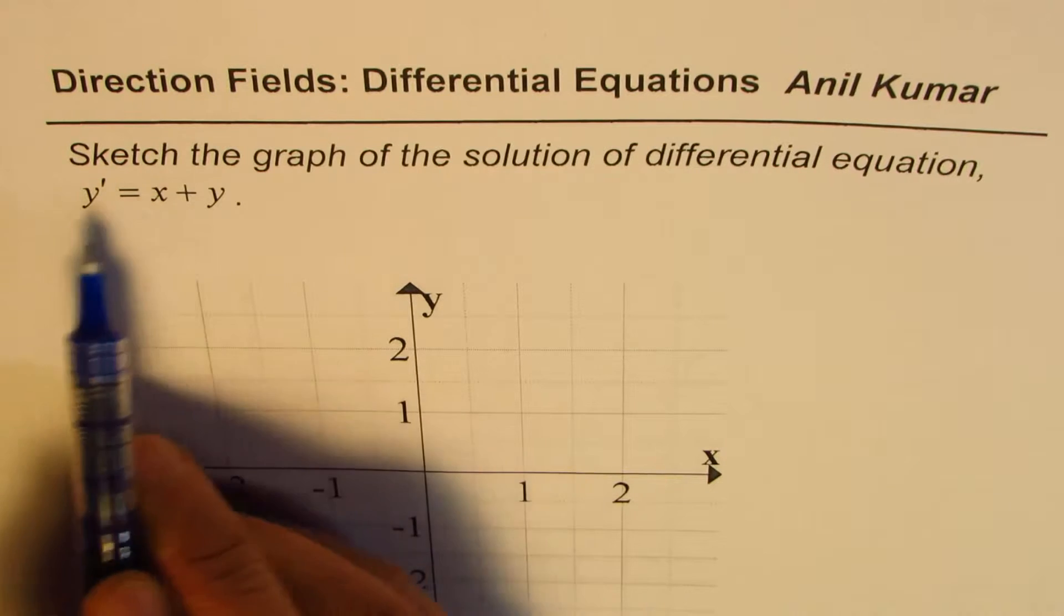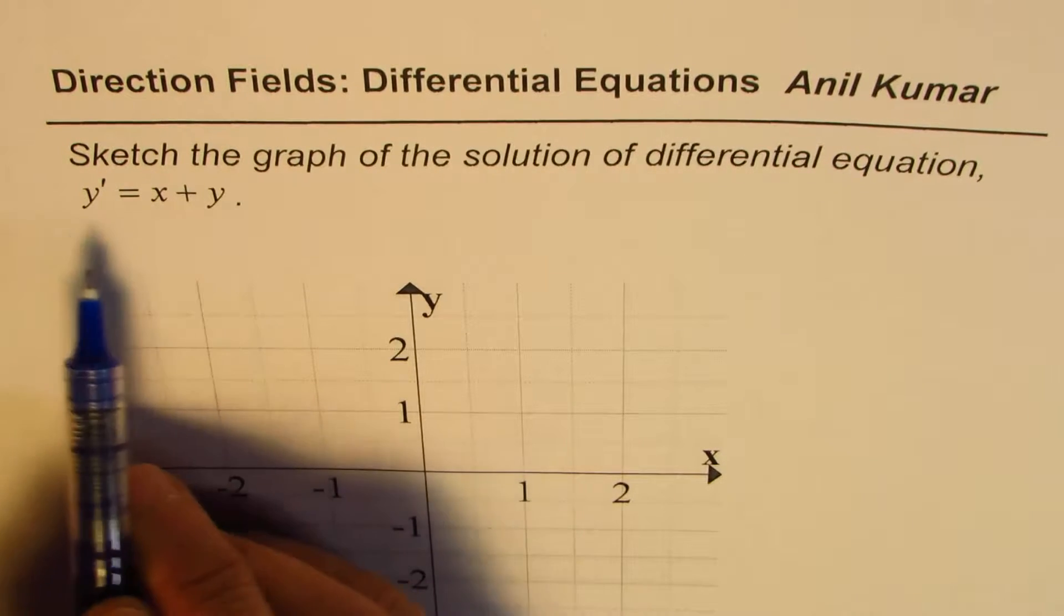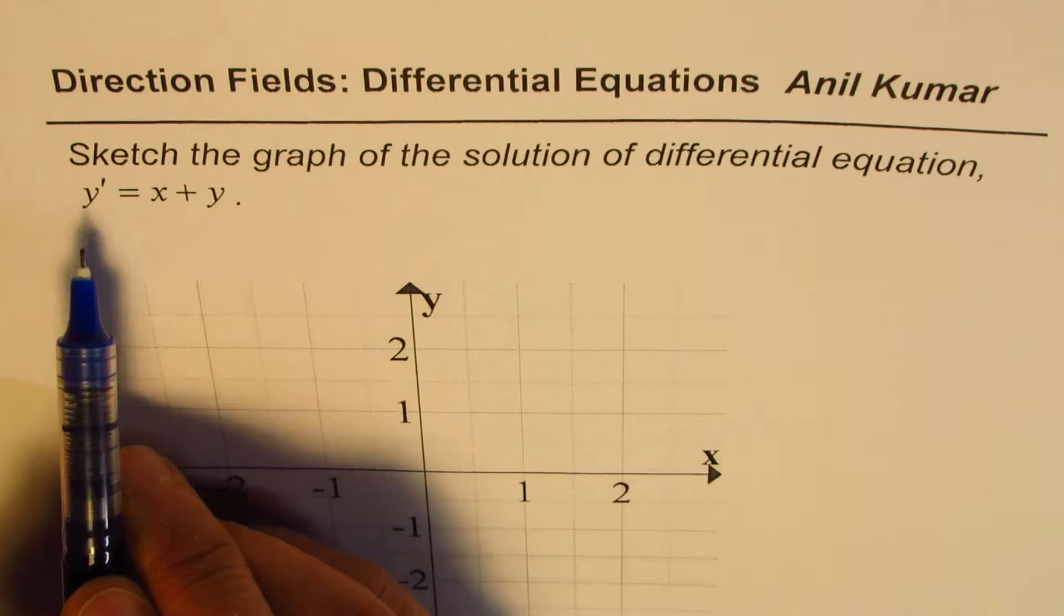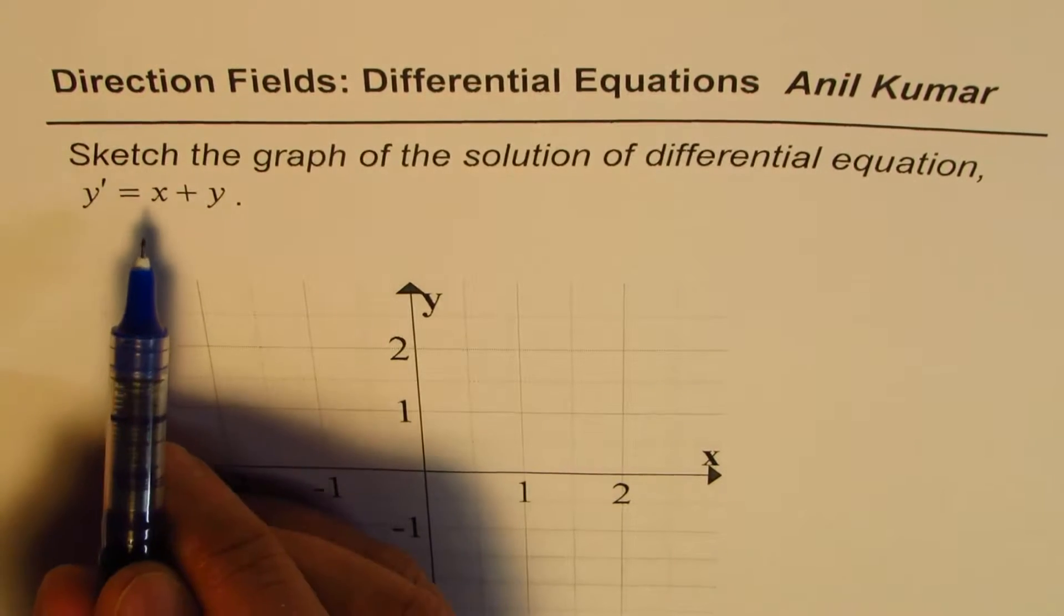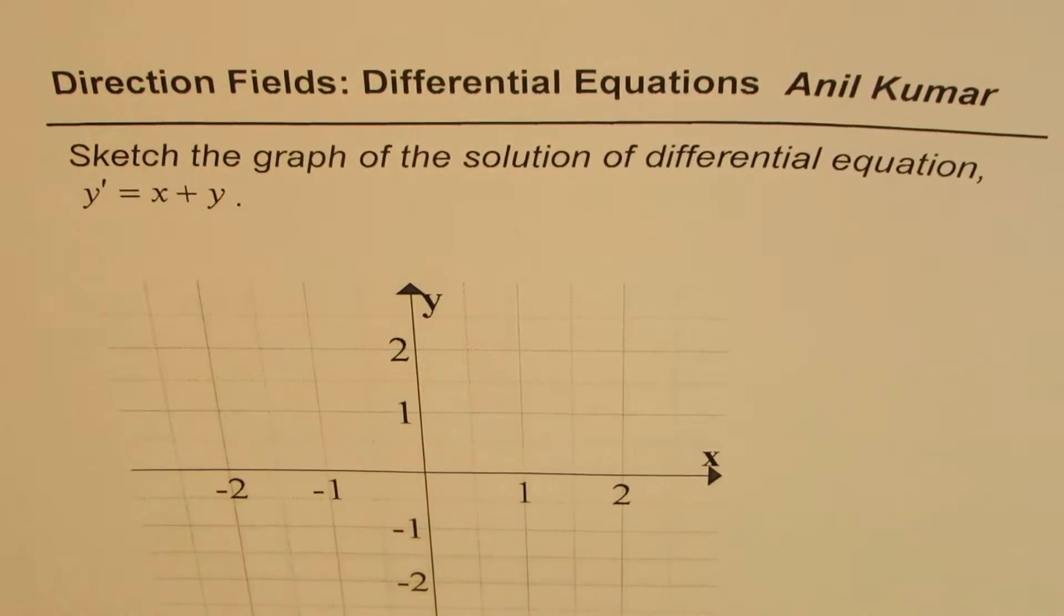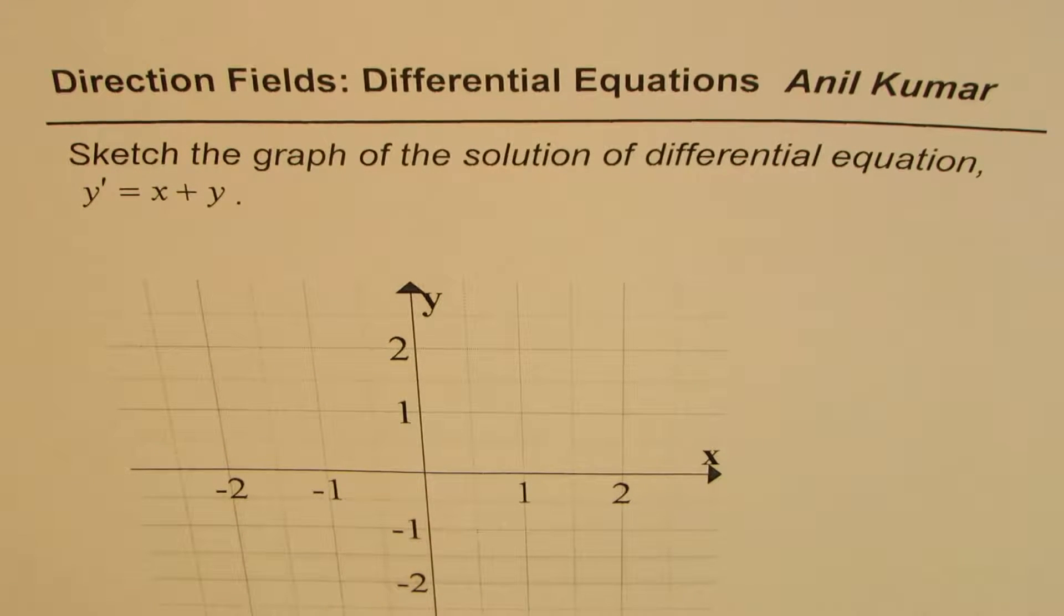Now, this first order differential equation tells us that the slope of the solution at any point is the sum of the coordinate point's values x plus y. That is what it tells us.